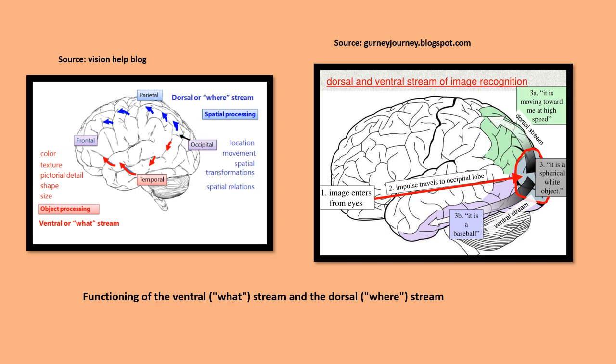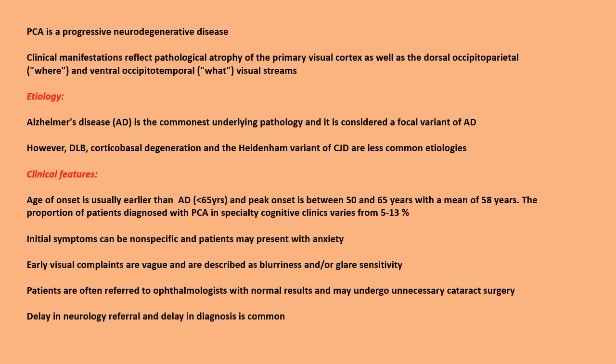The picture on the right shows how the two streams combine: when an image such as a baseball heading toward a person enters the eye, the ventral stream identifies it as a round object and as a baseball, whereas the dorsal stream processes its movement and orientation in space. PCA is a progressive neurodegenerative disease.